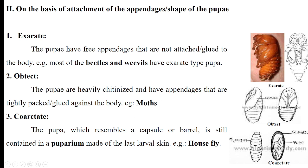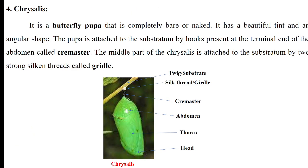Then coming to the Coarctate type of pupae — this type is found in house flies. The last larval skin actually functions as a puparium, and this type of pupae is known as puparium. Then the fourth type is Chrysalis — this type of pupae is actually naked and is found in butterflies. Butterfly pupae is known as chrysalis, and moth pupae is known as pupa. This chrysalis is attached to the substratum with the help of a silken thread known as girdle. There is also a hook known as cremaster. Inside the pupae, the lower side is the head, the middle is the thorax, and the upper side is the abdomen.